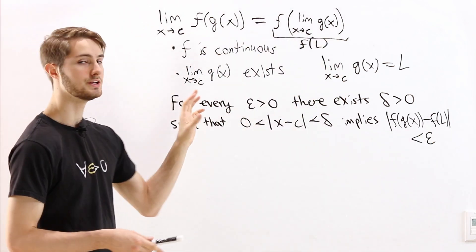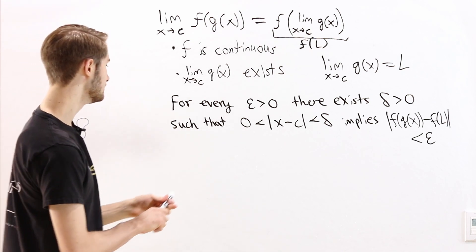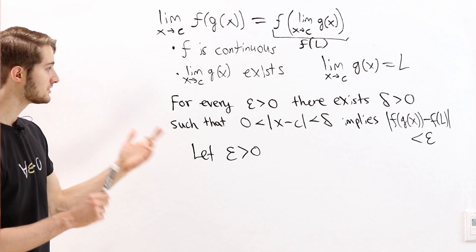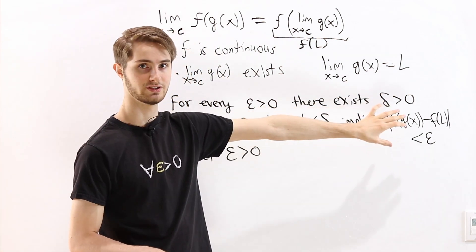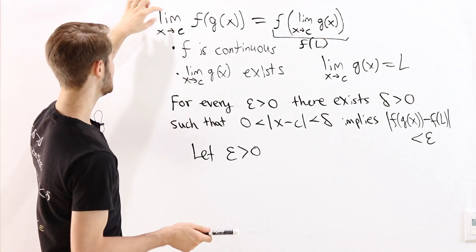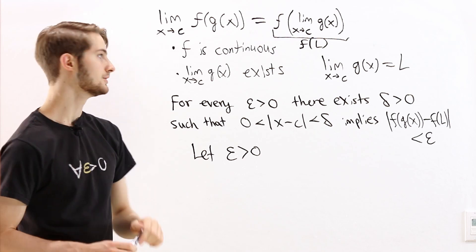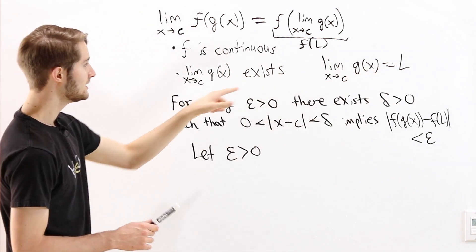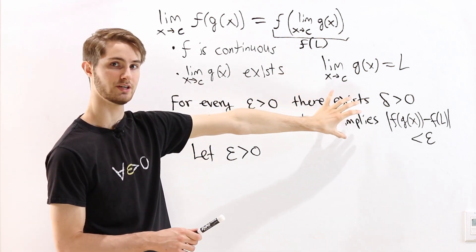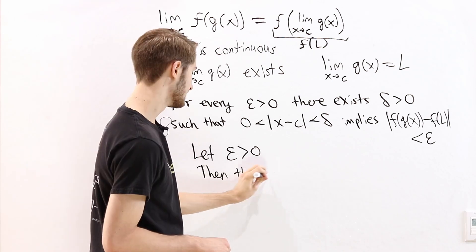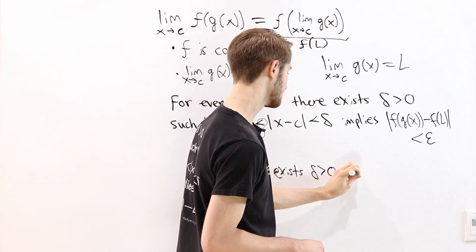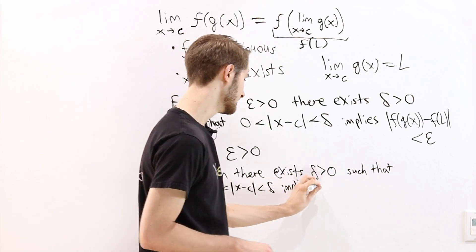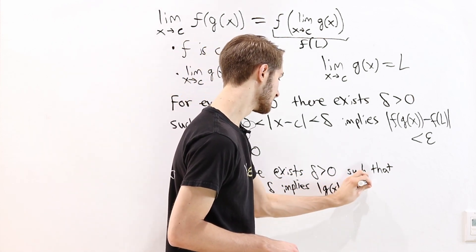If we want to prove that this statement is true for every epsilon greater than 0, we start by taking some arbitrary epsilon greater than 0, and we just have to show that there exists a delta that satisfies this condition. Right now we don't know anything about the limit of f of g of x, but we do know about the limit of g of x, because we assumed that that limit exists and equals L. So the limit as x approaches c of g of x has to satisfy the epsilon-delta definition, meaning there exists a delta greater than 0 such that 0 less than x minus c less than delta implies the distance from g of x to L is less than epsilon.